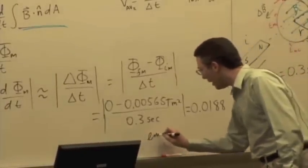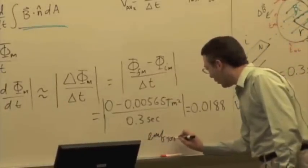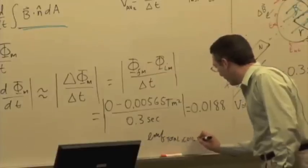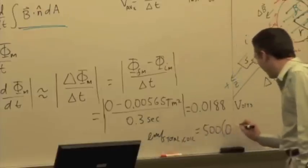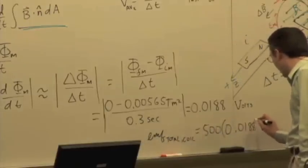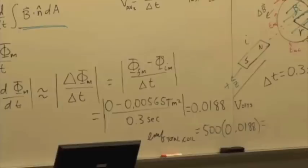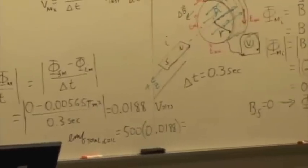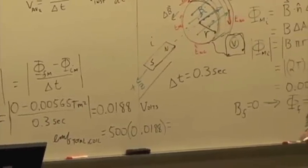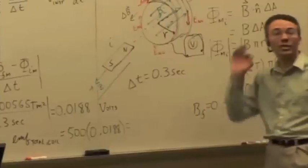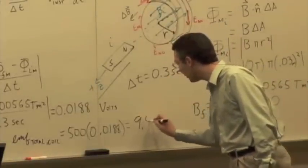And so we found the EMF of one loop is that 0.0188 volts. So the total EMF of the coil, 500 times 0.0188, and that gives you 9.4 volts.